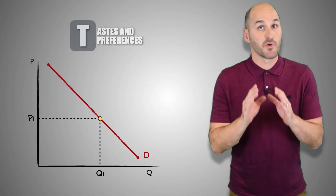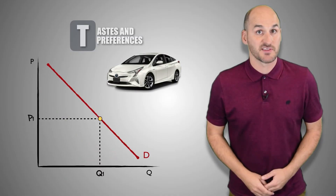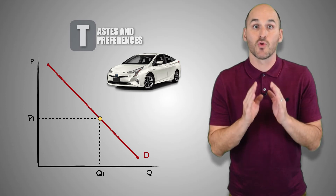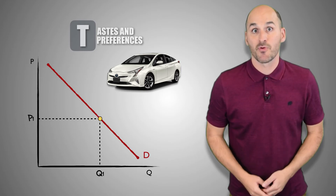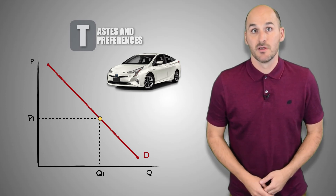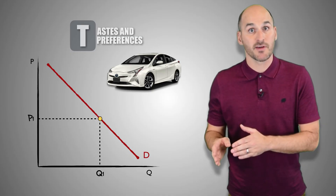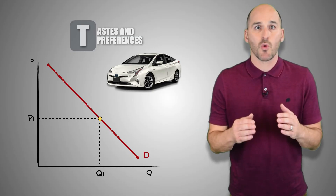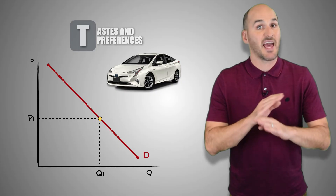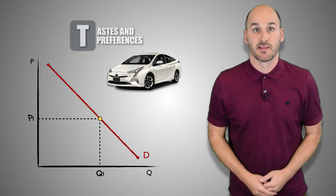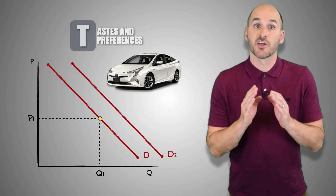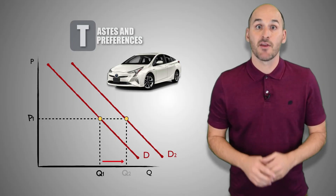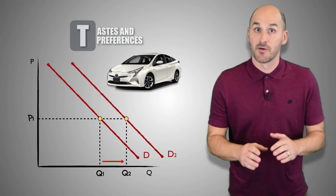Now suppose that with rising gas prices, consumers decide it's a great time to buy more fuel-efficient vehicles like the Toyota Prius. As consumers move to buy smaller vehicles with better gas mileage, consumers will buy greater quantities of the Prius at every price level — this change in consumer preferences will cause an increase in the demand for the Prius.